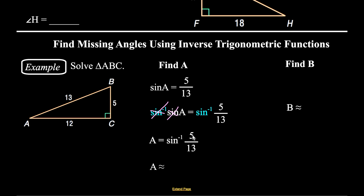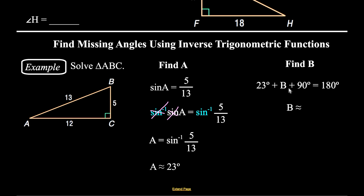We read this as: A is the angle whose sine is 5/13. On your calculator, divide 5 by 13 to get a value, then do second sine — that's where the inverse sine is, the second function of sine. Round to the nearest whole degree. For angle B, since the two acute angles always add to 90, we get B is approximately 67 degrees. It's approximate because we approximated angle A.